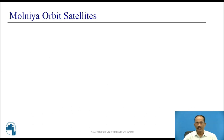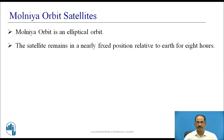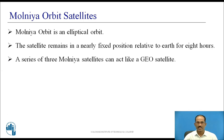Molniya orbit satellites: Molniya orbit is basically an elliptical orbit. In Molniya orbit, the satellite remains in a nearly fixed position relative to earth for 8 hours. A series of 3 Molniya satellites can act like a geosatellite. Molniya satellites are useful in near polar regions.